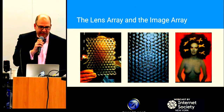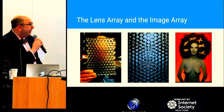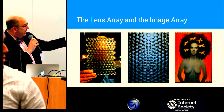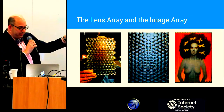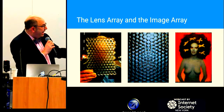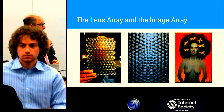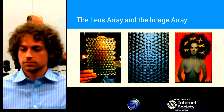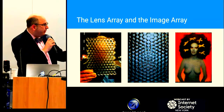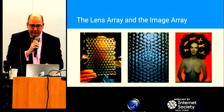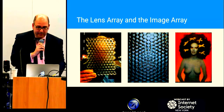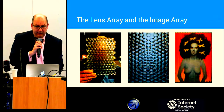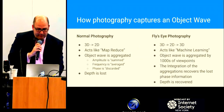As you see here, you have the lens array. The middle picture is the actual aggregation of all the images. When you marry them together, you get a dimensional object — a dimensional picture. That's the basics of fly's eye photography.